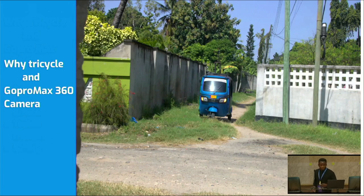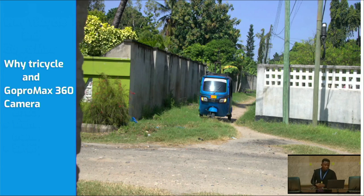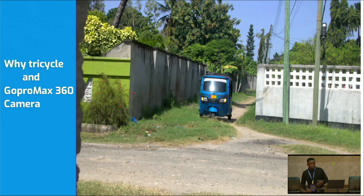This is an example of our road networks. You can see the street is narrow — you cannot use big vehicles to move through these areas.